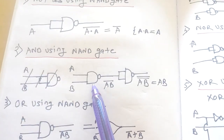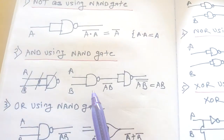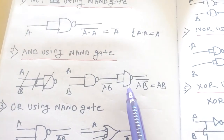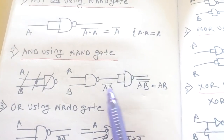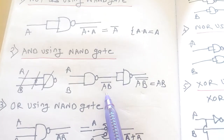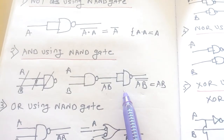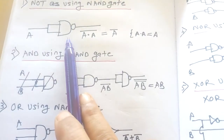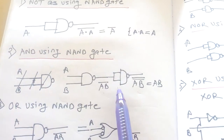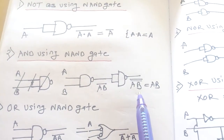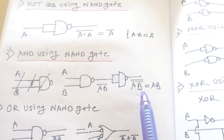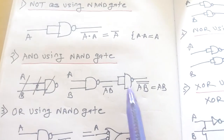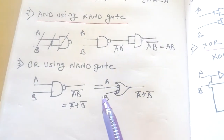Let us see how to construct an AND gate using NAND gate. If you apply a NOT gate in front of a NAND gate, you will get the AND gate. The NOT gate is implemented as a NAND gate. At the output you get AB double bar, which equals AB. So this is the AND gate using NAND gate.